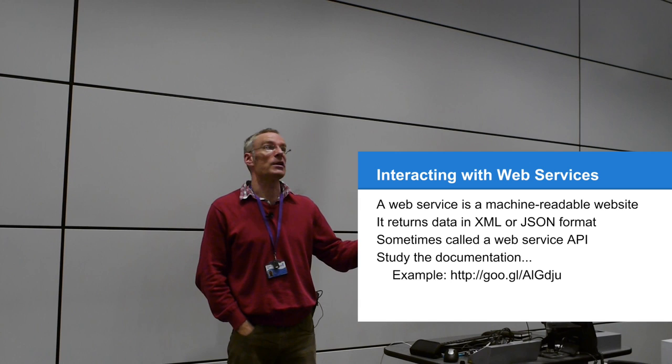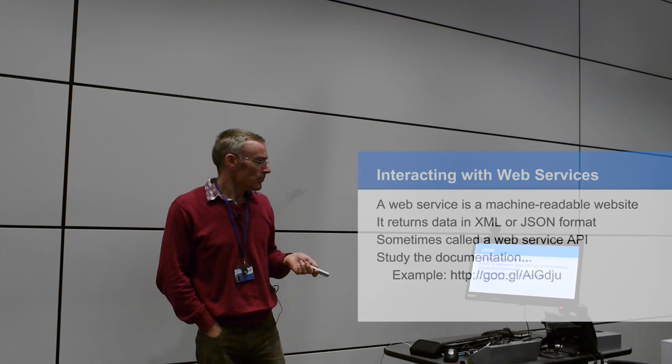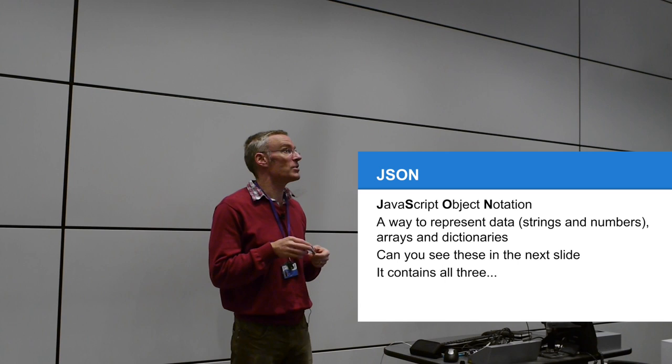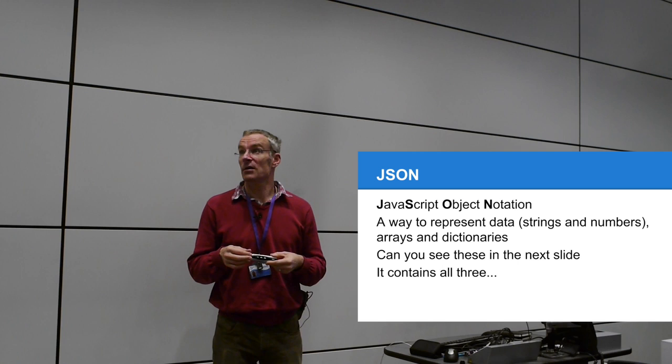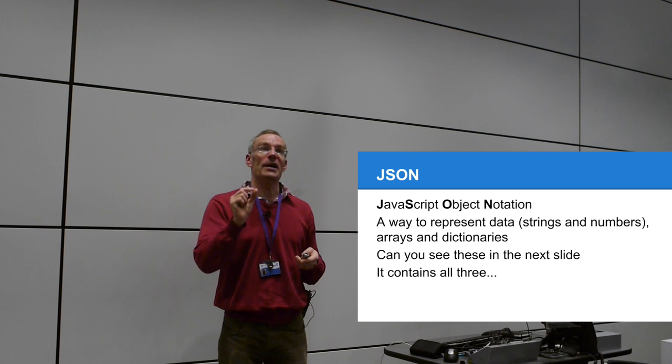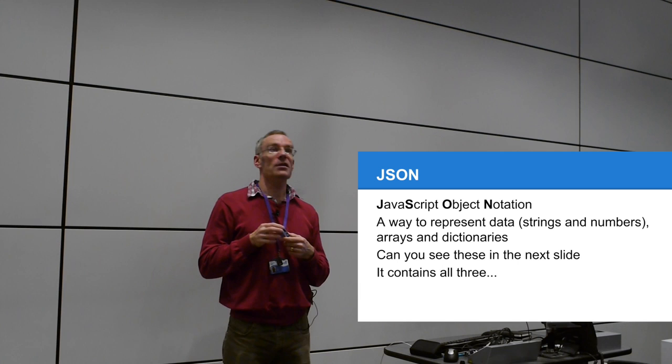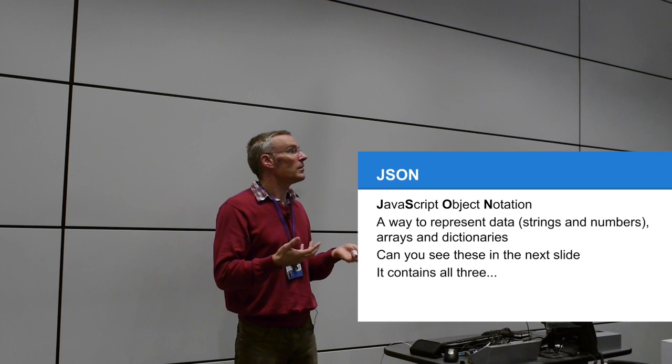I've put a short link to a sample web service API on the slide so you can have a look at how it works. JSON is one of the most important acronyms on the internet — without JSON there are no mobile web apps and no smartphone apps. It's the most important data format ever invented. Understanding how JSON works is absolutely essential. Like all formats, it's simple in concept, but the examples can seem rather overwhelming. Basically, it represents data — strings and numbers — and you can organize that data into arrays and dictionaries.